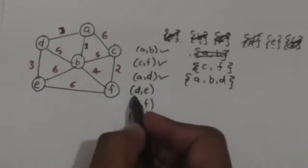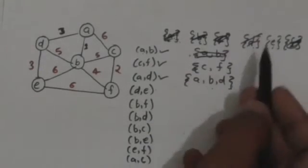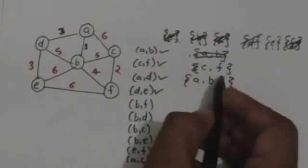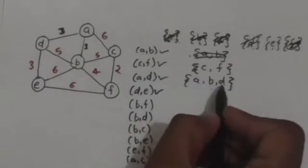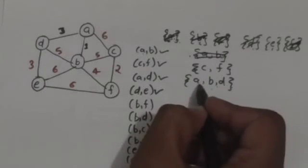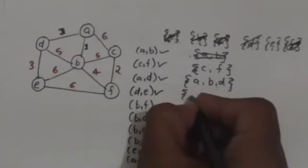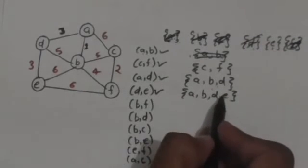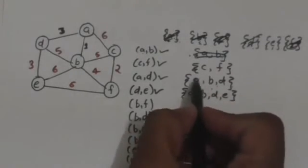Now the next edge is DE. Vertex D and vertex E are both in different sets, so we will select this edge to include in the minimum spanning tree. We will unite the set containing vertex D and the set containing vertex E, and this new set is their union.